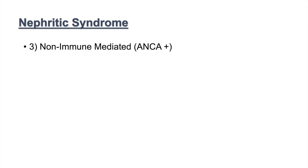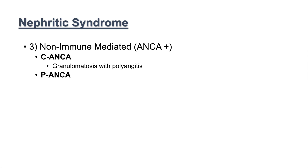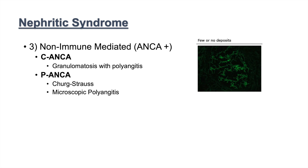The third large category of causes is non-immune mediated, and these are ANCA-positive. We look at two types of ANCA: C-ANCA is associated with granulomatosis with polyangiitis, while P-ANCA is associated with Churg-Strauss syndrome or microscopic polyangiitis. Non-immune mediated ANCA-positive nephritic syndrome has few or no deposits.